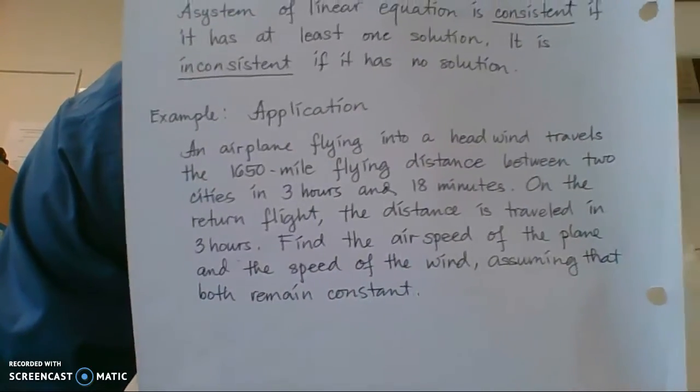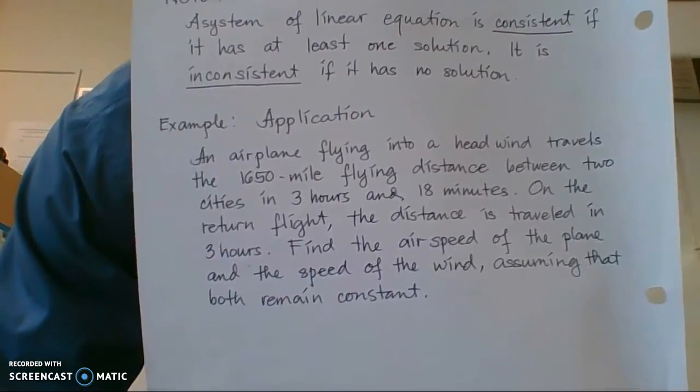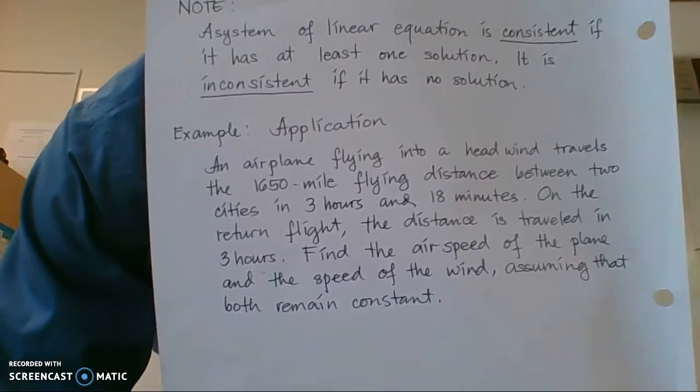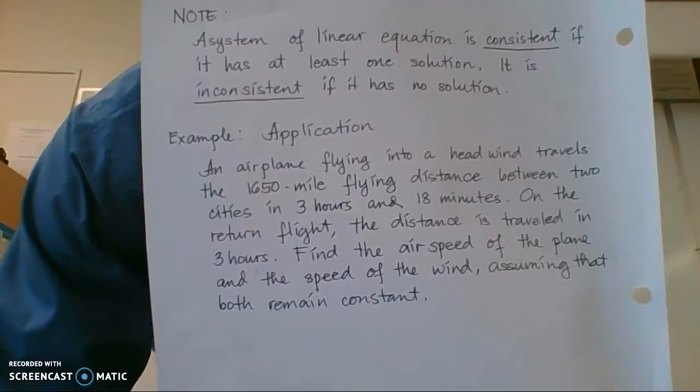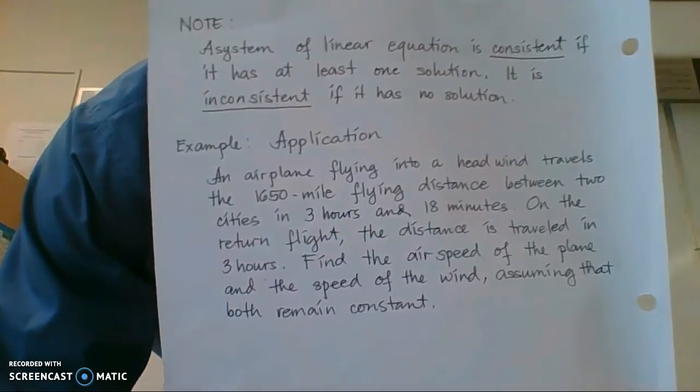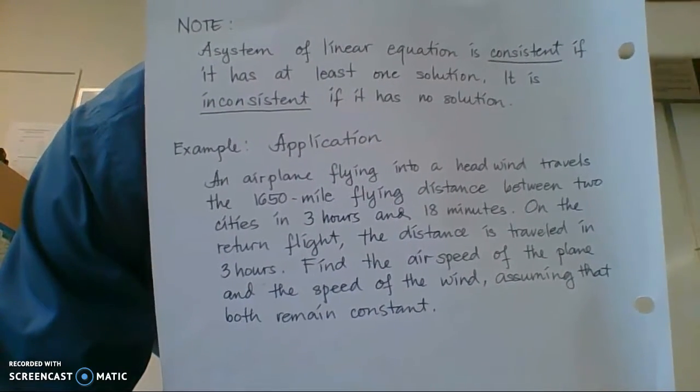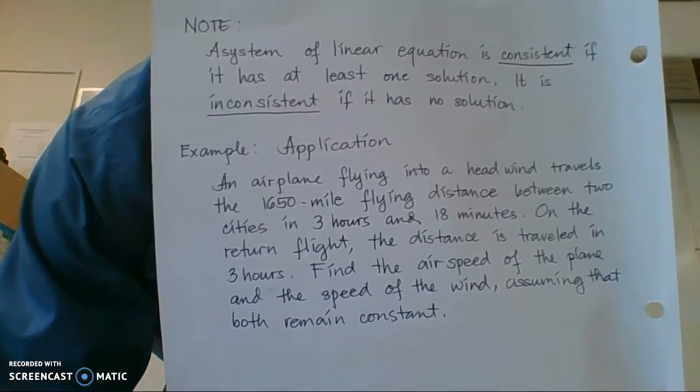Alright, an airplane flying into a headwind travels the 1,650 mile flying distance between two cities in three hours and 18 minutes. On the return flight, the distance is traveled in three hours. Find the airspeed of the plane and the speed of the wind, assuming that both remain constant.